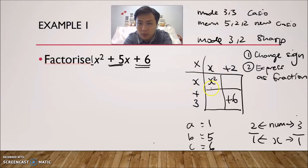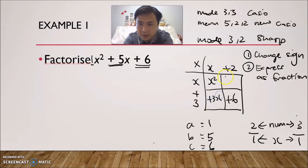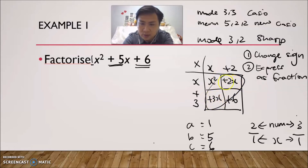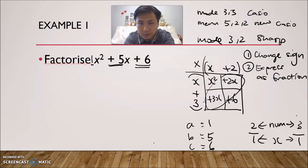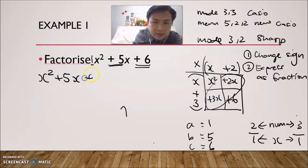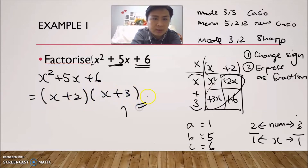Finally, we check: the addition of the two middle boxes should give the center term. x × x gives x², 2 × 3 gives 6. For the cross terms: 3 × x = 3x, and 2 × x = 2x. Adding them: 3x + 2x = 5x. That gives us 5x, which is correct. So the answer is x² + 5x + 6 = (x + 2)(x + 3).